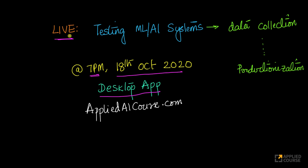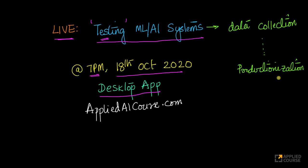The topic of discussion for the coming live session is testing and debugging machine learning and AI systems. This is a very important aspect of building real-world machine learning systems, and in this session we will discuss how to test, debug, and fix bugs that might arise at every stage of building a real-world machine learning system.